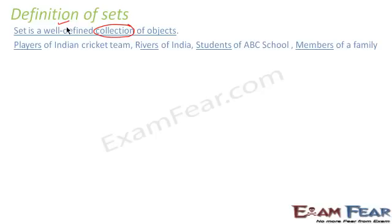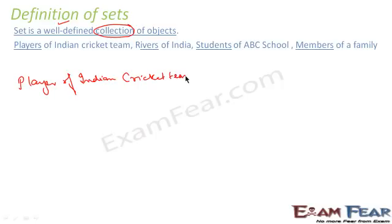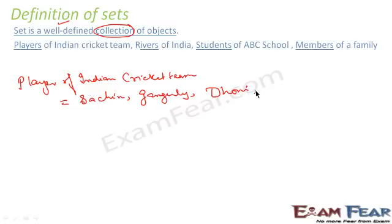What is a set? A set is a well-defined collection of objects. For example, when I say players of the Indian cricket team, this is one set. This set can include members such as Sachin, Ganguly, Dhoni, Sehwag, etc. So this is one set.